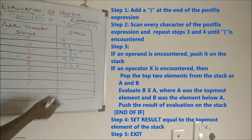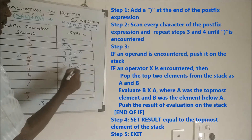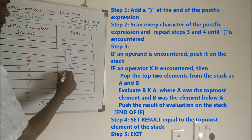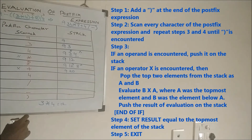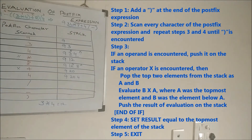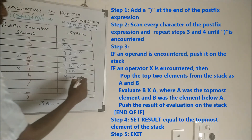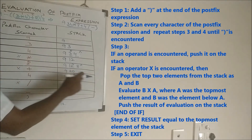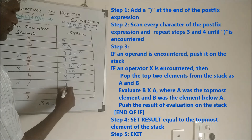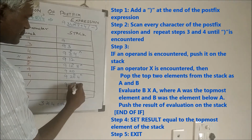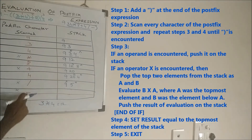Next character is 8 — it is an operand, push it onto the stack. Now we encounter the plus operator: A is 8, B is 12, so B plus A is 12 plus 8 = 20. Push 20. Next is the slash operator: A is 4, B is 20, so 20 divided by 4 = 5. Push 5.